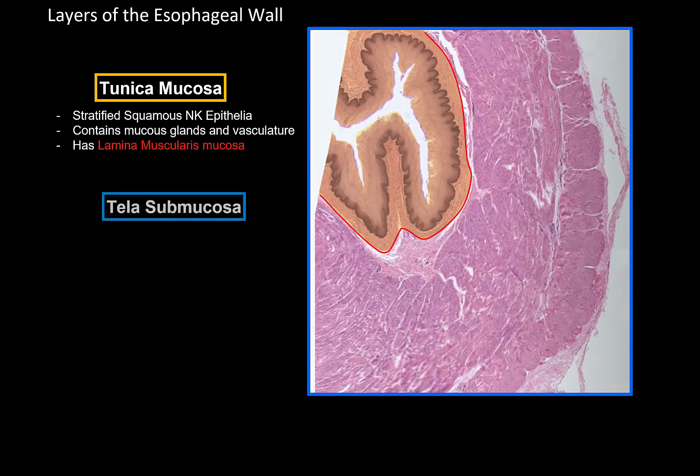Underneath the mucosal layer we have tela submucosa — note that 'tunica' means a layer of tissue while 'tela' means web-like or loose connective tissue, so all layers are tunica except this one. Here you'll find loose connective tissue together with esophageal glands producing mucin for lubrication, as well as esophageal cardiac glands producing neutral mucin that protects the esophagus from acidic gastric juice. This is important because the stomach contains hydrochloric acid, which might damage the tunica mucosa in cases of vomiting or gastric reflux.